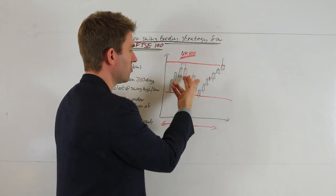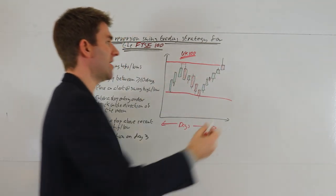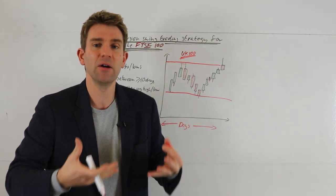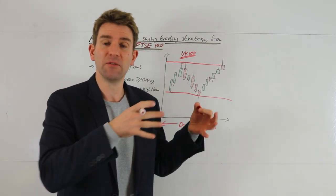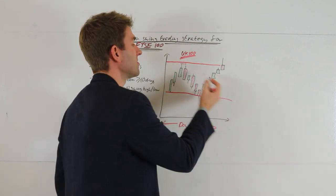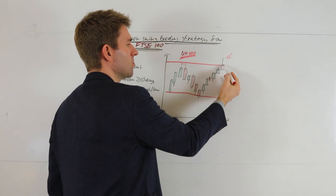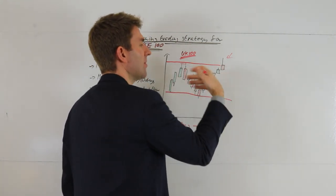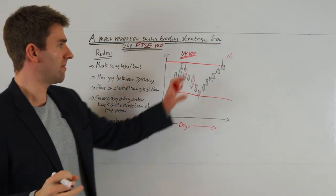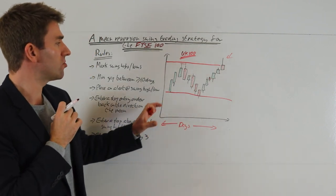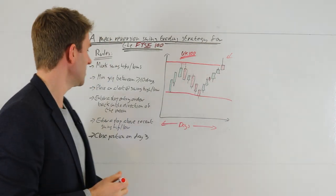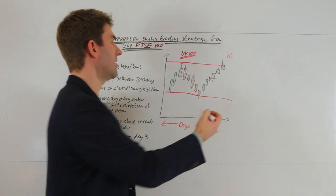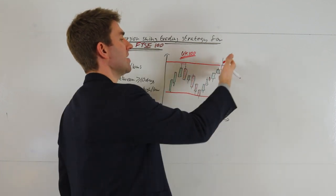We wouldn't be taking this short trade because we've only got six candles — not enough. However, this is the trade we would take. If you want to adjust and adapt this to five days, by all means — this is an idea for you to mold into a specific rule-based strategy for the FTSE 100. This is a definite trigger: it closes below that swing high, there's more than 10 days gap in between. So we'd place an alert at this level so we don't have to be in front of the screen all the time.